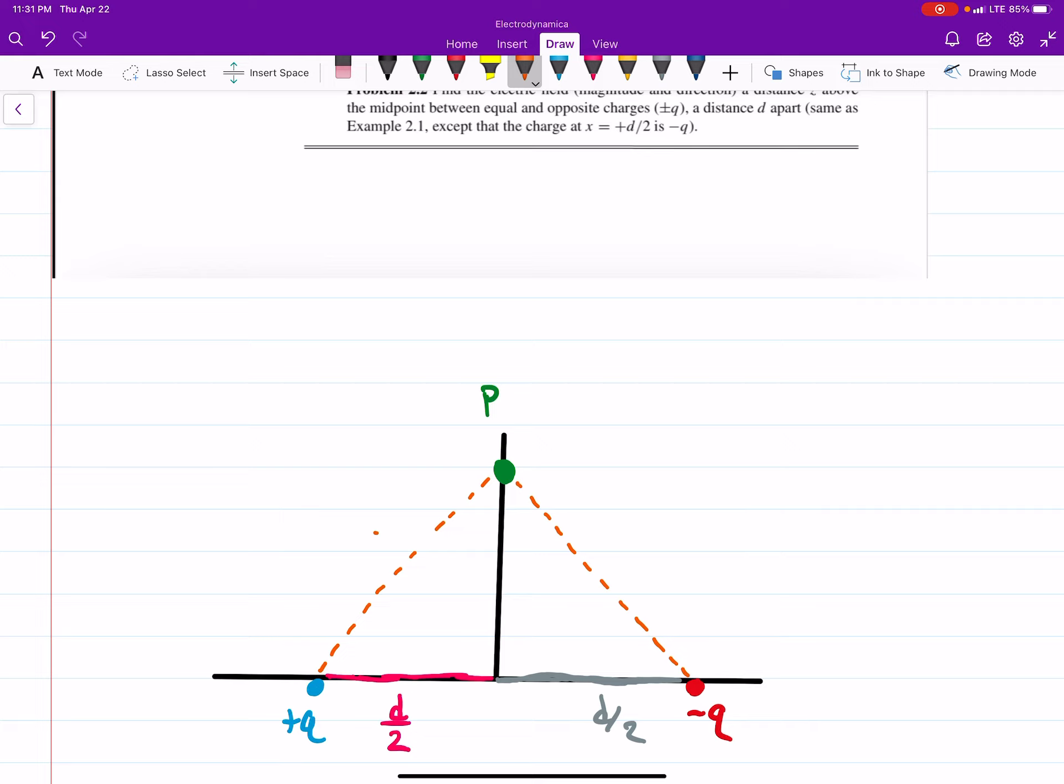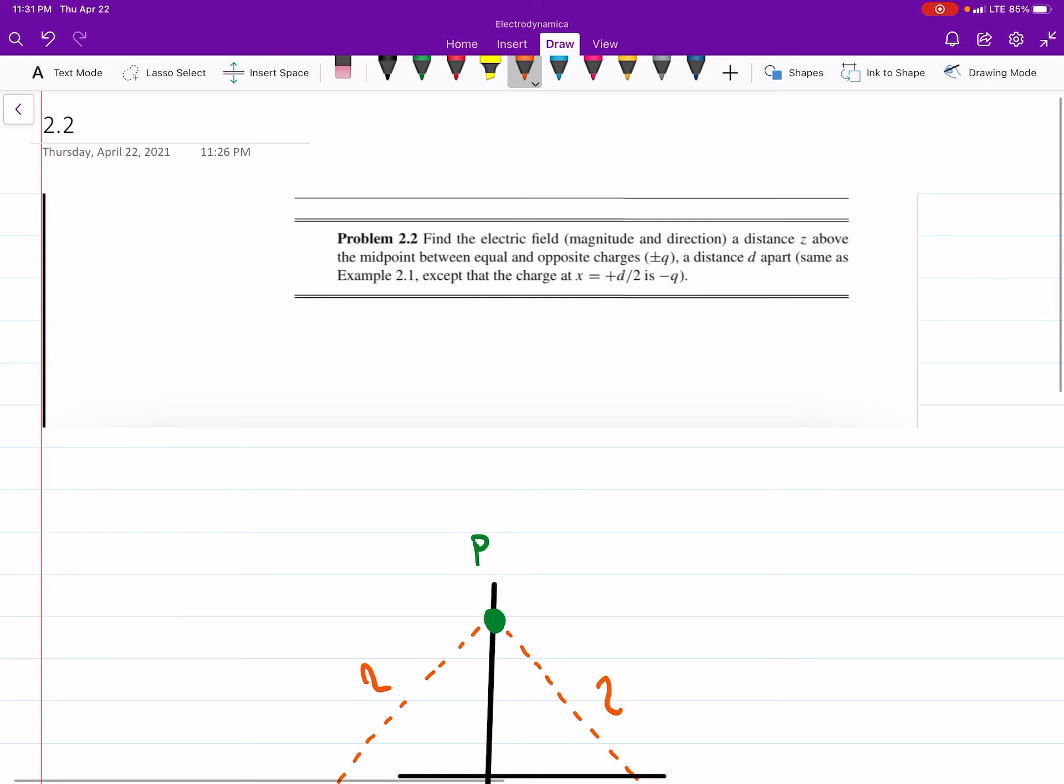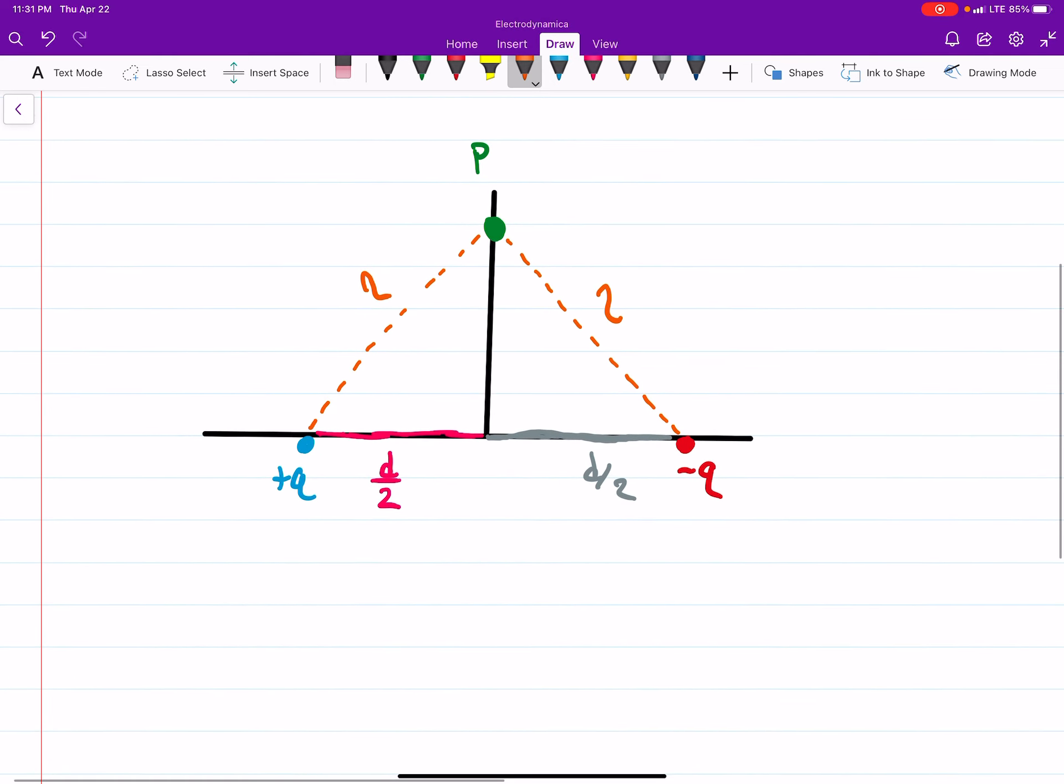And this is our separation vector script r. Now the book does it a little bit differently in example 2.2, I think it was, or 2.1, but it doesn't matter. These are right angles that we've made. This height is a height z. And we'll call this angle here theta. And this angle here theta. Hopefully you can see those angles are going to be the exact same because of the type of triangle we have here.